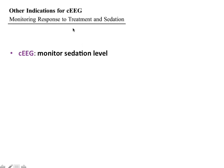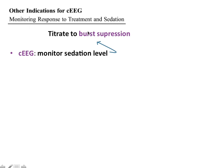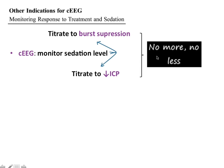Other indications for continuous EEG include monitoring response to treatment and sedation. Continuous EEG can monitor sedation level and titrate sedation to achieve burst suppression — important when using propofol, benzodiazepines, or barbiturates. It can also be used to titrate sedation to reduce ICP by deepening sedation when ICPs are rising, and helps optimize sedation so that neither too much nor too little is given.